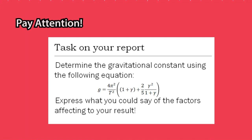For your report, the first task is to determine the gravitational constant using the given equations — noting that the effective length of the swing is not just the string length alone, because you need to take into account the Steiner theorem. Second, express what factors affect your results — for example, if your gravitational constant value is not very accurate, identify what kinds of errors affected it. Explore these factors and include a thorough evaluation and analysis in your report.